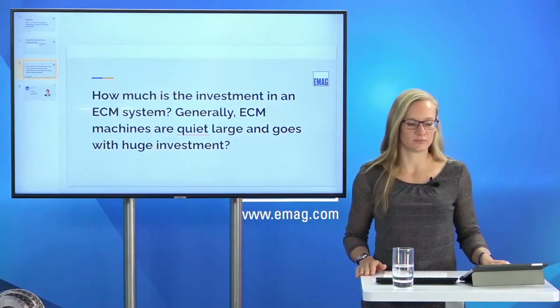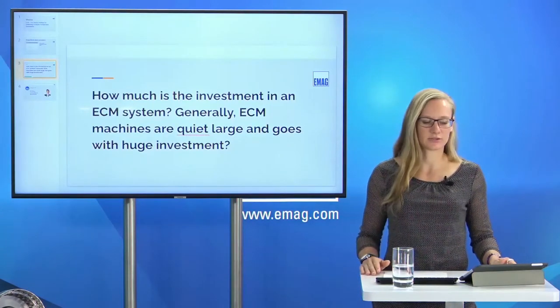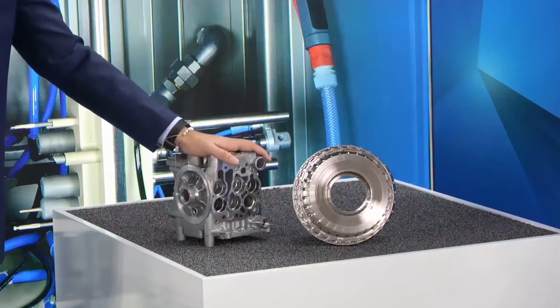One more question regarding investment: how much is the investment in an ECM system, since general ECM machines can be large with huge investments? The answer: we have a different range of capacity based on the parts. Simpler parts need easier deburring tools. For valve blocks or plate carriers the tooling can be more complex. To give a feeling of the investment range: it starts at approximately €190,000 up to €250,000 — but this depends on the specific application.